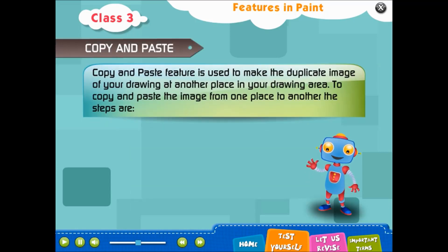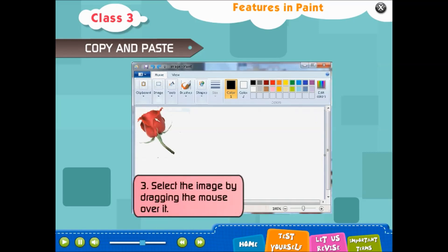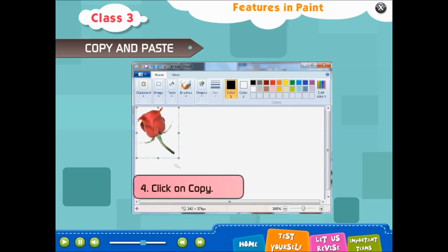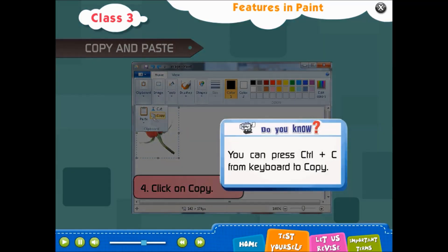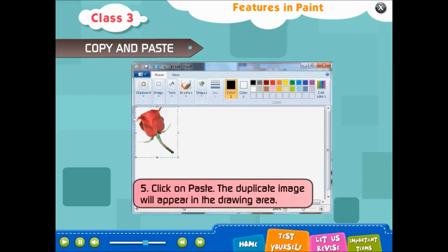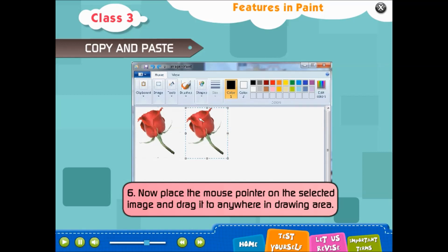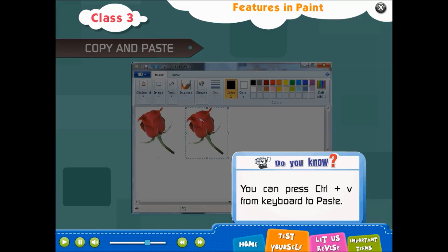Copy and Paste: this feature is used to make a duplicate image of your drawing at another place in your drawing area. Steps: 1. Click on Home tab. 2. Click on Select. 3. Select the image by dragging the mouse over it. 4. Click on Copy (you can also press Ctrl + C from the keyboard). 5. Click on Paste — the duplicate image will appear in the drawing area. Then place the mouse pointer on the selected image and drag it anywhere in the drawing area. You can press Ctrl + V from the keyboard to paste.